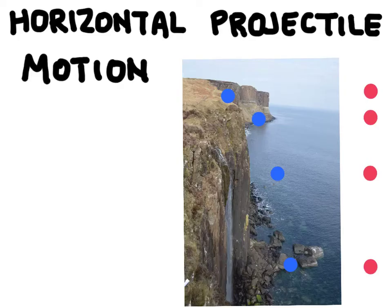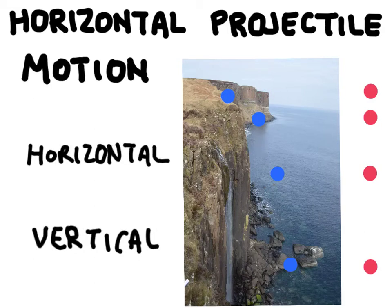It's important to understand that the horizontal component of the blue ball's motion is going to be independent of its vertical motion. It's almost as if we have two objects — one moving horizontally and one moving vertically. They don't interact with each other, so the horizontal component stays at a very constant rate of motion. What relates the horizontal and vertical components is time — they are connected by time, but other than that their motion is basically independent of each other.